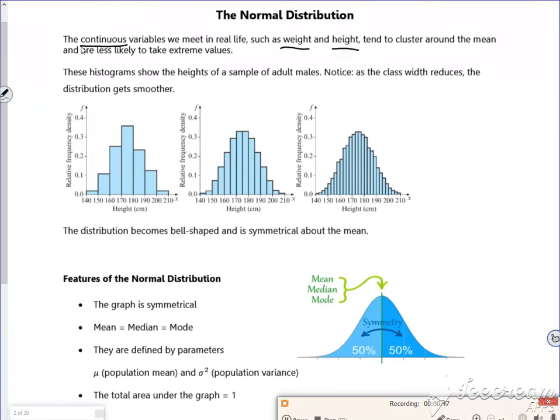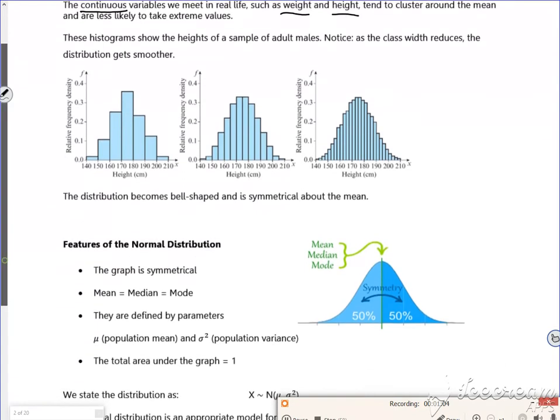So here you've got some histograms which kind of show the probabilities. The idea being that the more kind of sections you've got, the more the shape resembles what they call a bell curve.